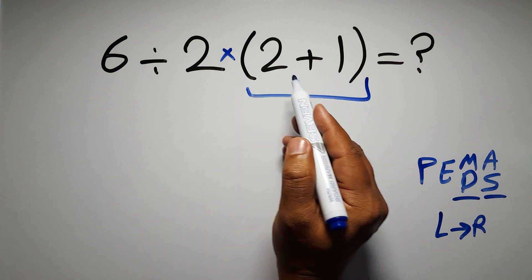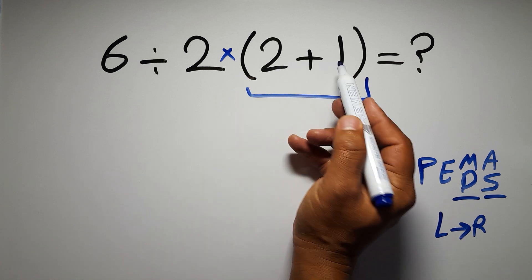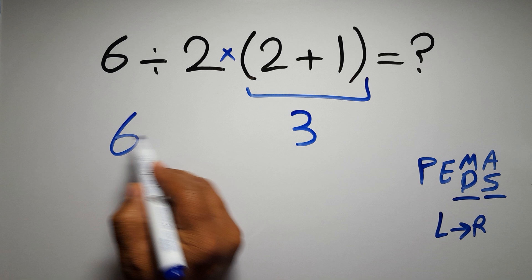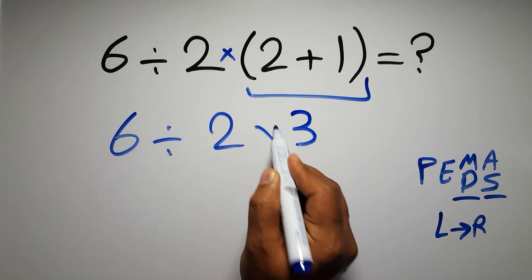So first these parentheses, inside these parentheses, we have 2 plus 1, which gives us 3, so 6 divided by 2 times 3.